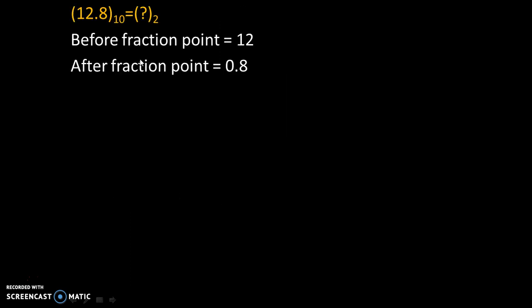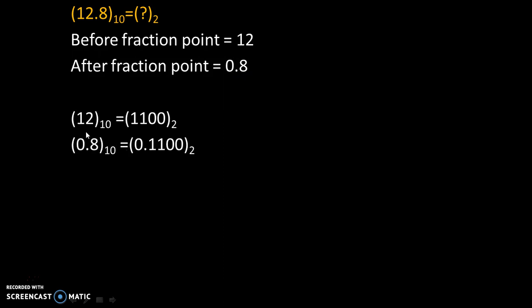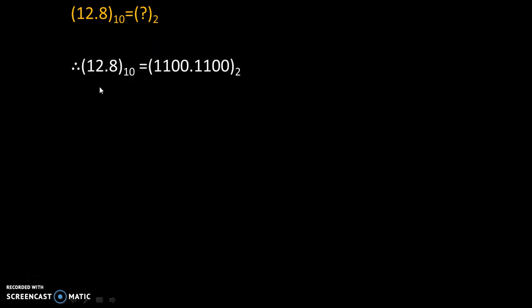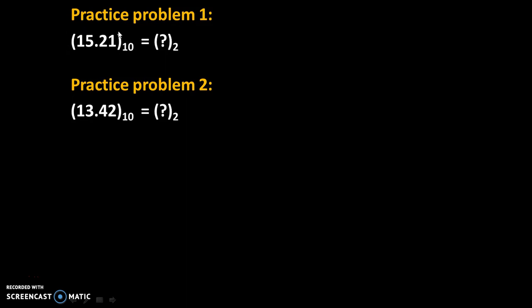We started with values before the fraction point, 12, and after the fraction point, 0.8, and converted them separately. So 12 in decimal is equivalent to 1 1 0 0 in binary, and 0.8 in decimal is equivalent to 0.1 1 0 0 in binary. Therefore, 12.8 to the base 10 is equal to 1 1 0 0 . 1 1 0 0 to the base 2. There are a few practice problems — solve them and give your answers in the comments. Thank you.